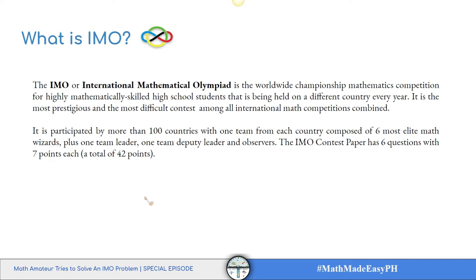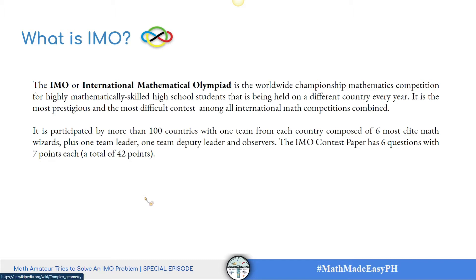The IMO contest paper has six questions worth seven points each, for a total of 42 points. The content ranges from extremely difficult algebra and pre-calculus problems to branches of mathematics not conventionally covered at school — and often not at university level either — such as projective and complex geometry, functional equations, combinatorics, and well-grounded number theory, for which extensive knowledge of theorems is required.